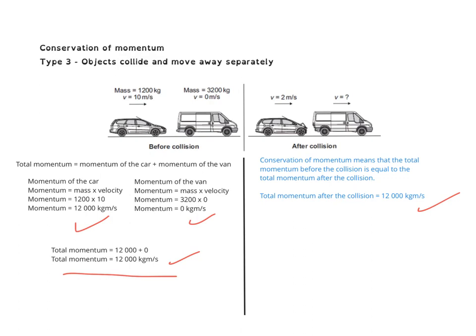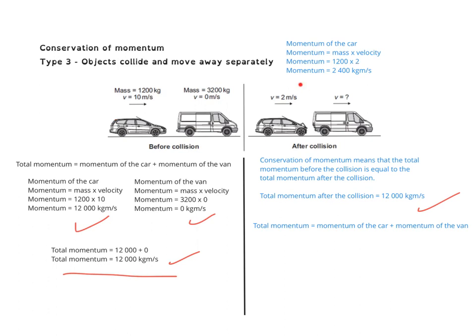Now we need to work out the velocity of the van by setting the total momentum after the collision equal to the momentum of the car plus the momentum of the van. After the collision, the car's momentum is mass times velocity: 1,200 multiplied by 2, giving 2,400 kilogram metres per second. For the van, momentum equals 3,200 kilograms multiplied by v, where v is the unknown velocity we're solving for. We'll substitute both values into the equation.